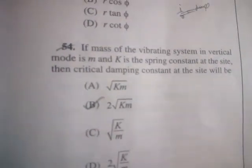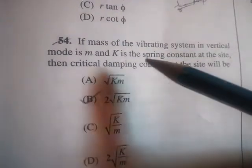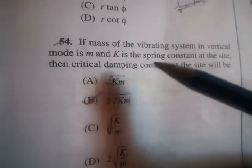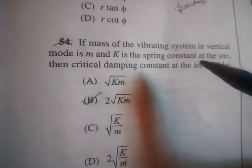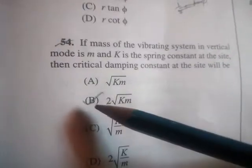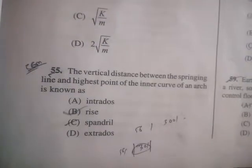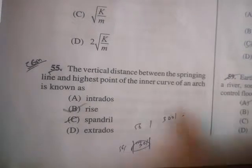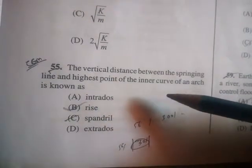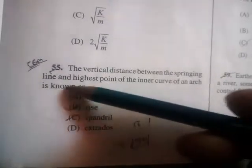Next question: if mass of the vibrating system in vertical mode is m and k is the spring constant at the site, then the critical damping constant will be B: 2√(km).